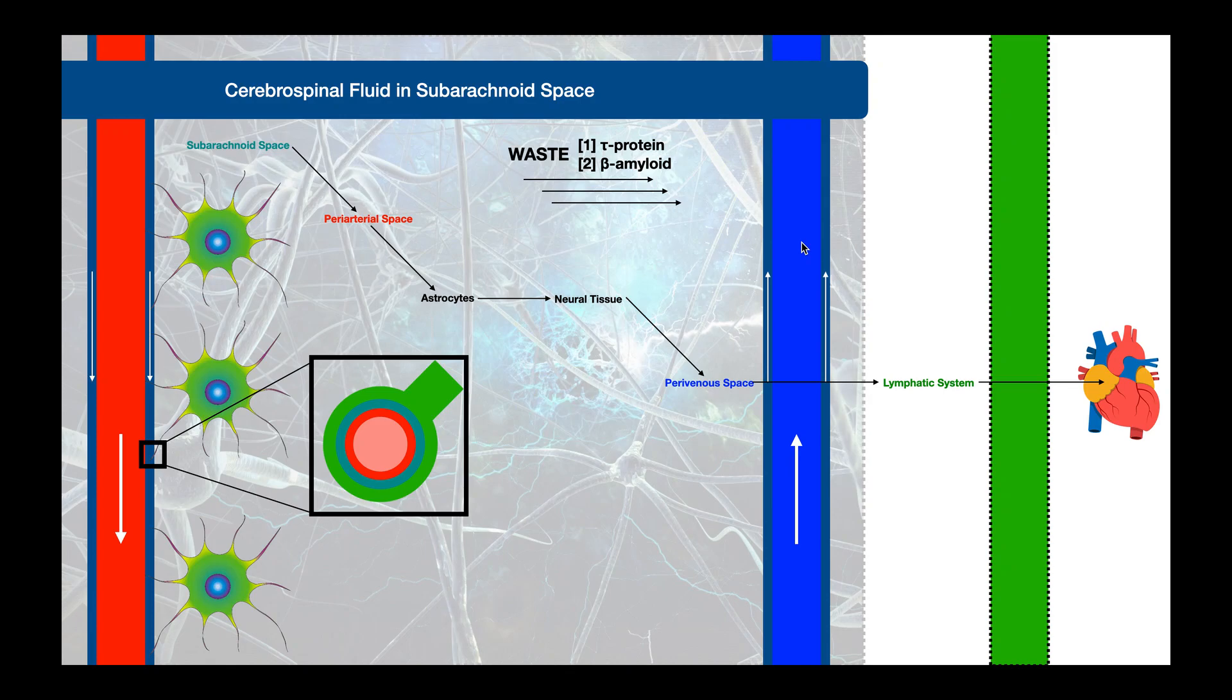The glymphatic system's purpose is waste removal. One way you get this fluid triggered to move from this side to this side is that the arterial side has pulses because it is still subject to the force from the heart contraction. Arteries, you feel a pulse. You get pulses that pulse the fluid from the arteries over to the veins. You get the waste products picked up, they go to the venous side, and they're eventually eliminated.